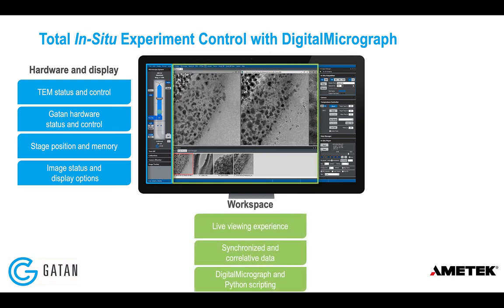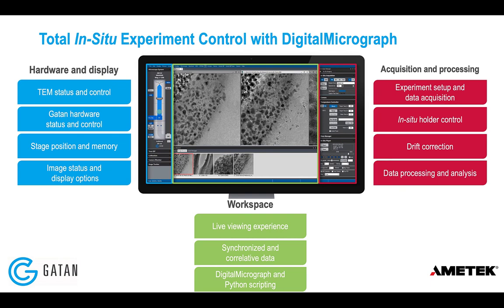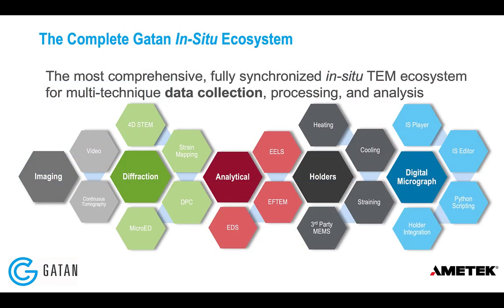In the middle region, you'll see the live data being displayed for you to monitor the reaction in real time. Any datasets you open are displayed here for analysis, and you can use tabbed workspaces to stay organized. You can also open, write, and run scripts for data collection and analysis using DM scripting or Python. On the right-hand side, there are controls for data acquisition and processing — choosing camera exposure time, controlling your in-situ holder, applying drift correction, and processing in-situ data.